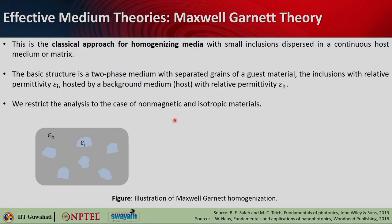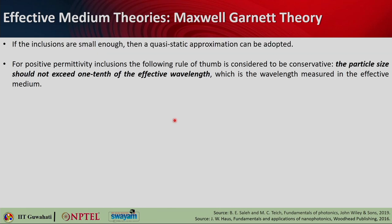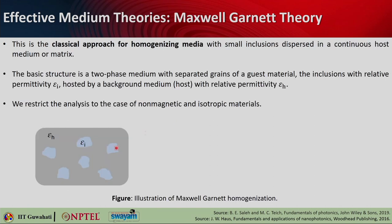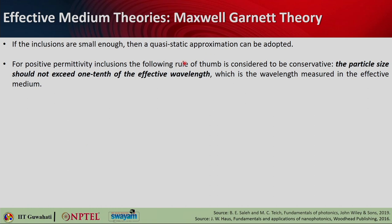We restrict the analysis to the case of non-magnetic and isotropic materials. When those inclusions — the small islands — are sub-wavelength in nature, you can easily adopt the quasi-static approximation. For positive permittivity inclusions, the rule of thumb is that the particle size should not exceed one tenth of the effective wavelength — less than lambda over 10. For metallic or negative permittivity inclusions, the limit of validity is much stricter because these negative permittivity materials can show localized surface plasmon resonance.